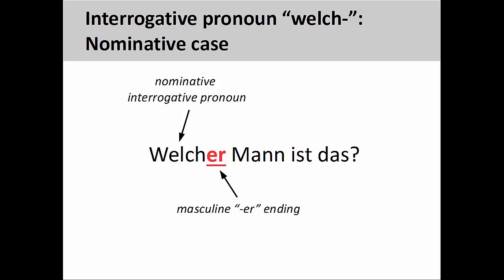Although the interrogative pronoun 'wer' is limited to masculine endings, 'welch' takes the full range of endings based on the gender, case, and number of the noun it modifies. Here, the masculine -er ending indicates that the noun it modifies is in the nominative case and the subject of the sentence — 'Welcher Mann ist das?' meaning 'Which man is that?'